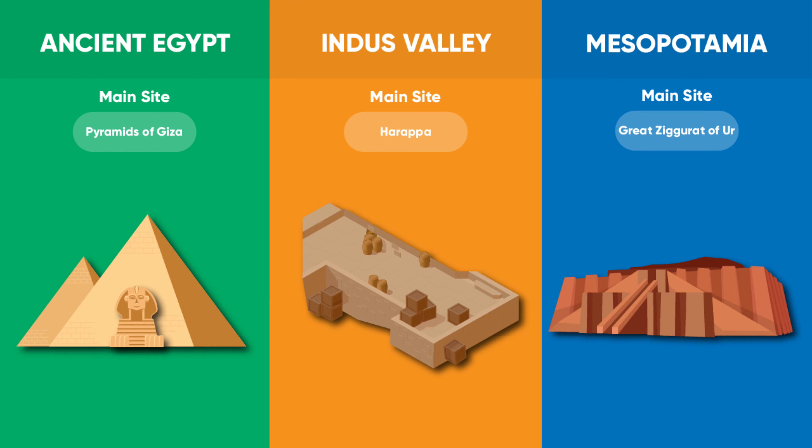One of the most popular sites in ancient Egypt are the Pyramids of Giza. For Indus Valley civilization, it is Harappa as well as Mohenjo-Daro.